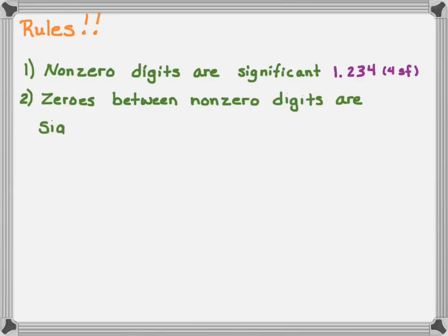Rule two: zeros between non-zero digits are significant. So the number 1004 — those zeros are significant because they fall between the 1 and the 4, which are non-zero digits. So I have four significant figures in this number.